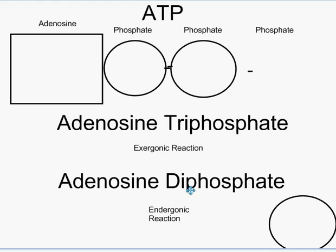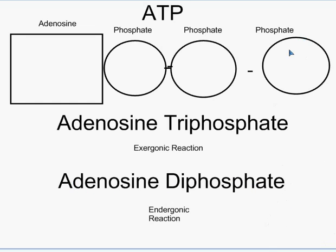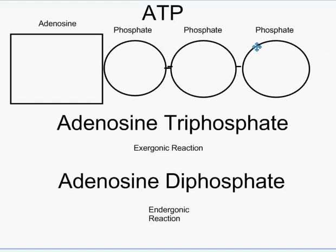The energy is stored in the bonds that hold the phosphate groups together, so when one phosphate group is removed and this bond is broken, it's this broken bond that provides the energy for the cell. When this happens, the ATP actually goes to what we refer to as ADP, because now instead of adenosine triphosphate, we have adenosine diphosphate. In essence, the one bond that held the second phosphate group to the third phosphate group has been broken, and when that bond is broken, energy is released that the cell can then use for its processes.